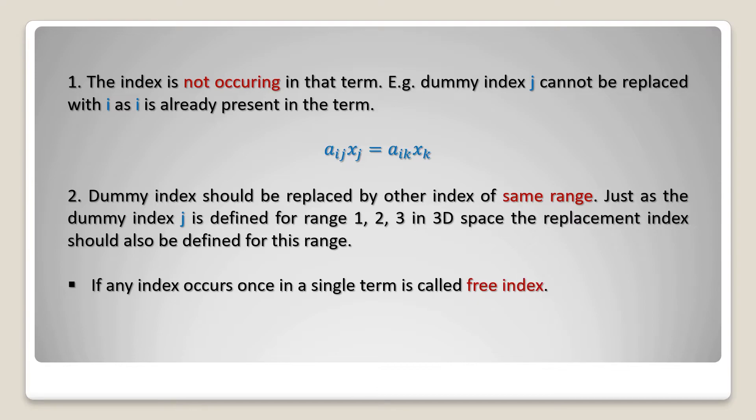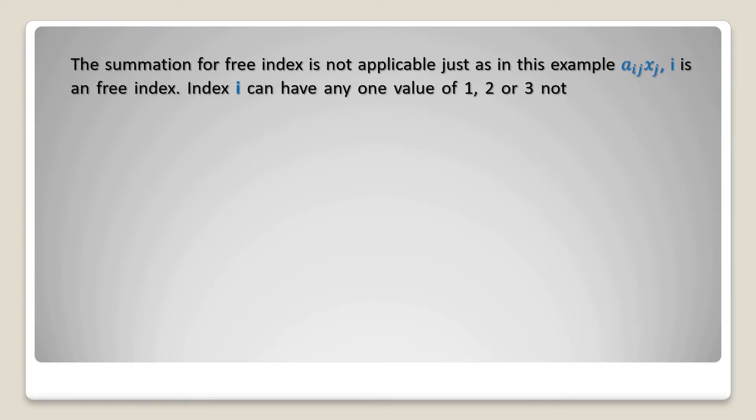If any index occurs once in a single term, it is called a free index. The summation for free index is not applicable. Just as in the example aij xj, i is a free index. Index i can have any one value of 1, 2, or 3, not all values. Free index cannot be replaced by any other suffix.